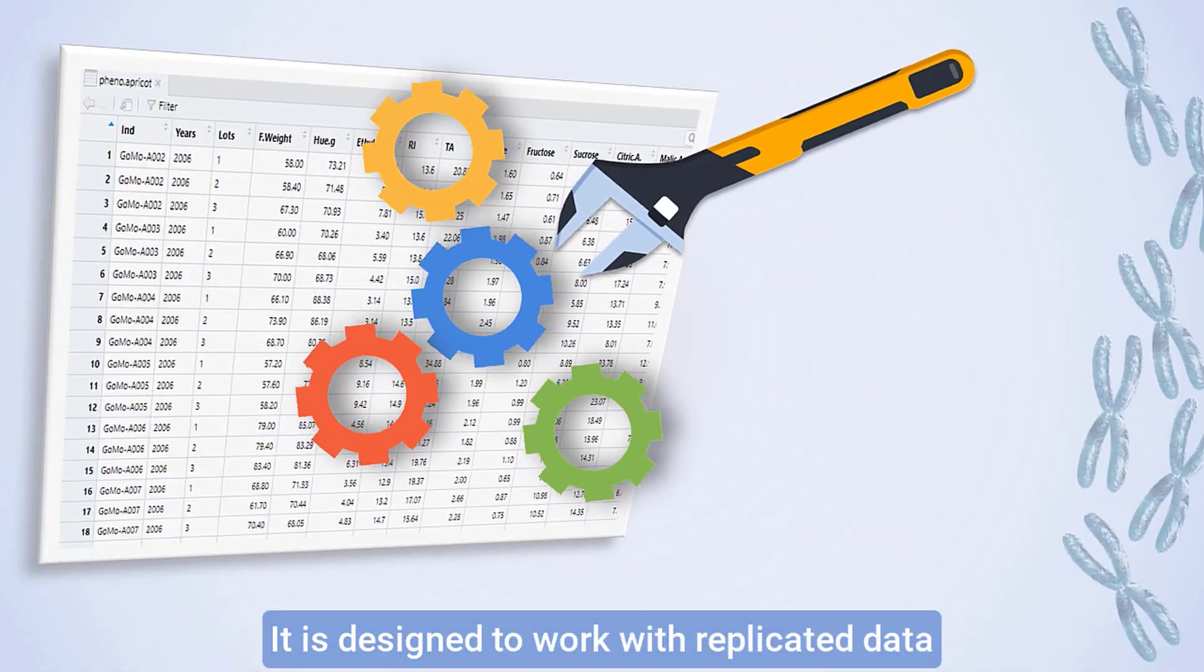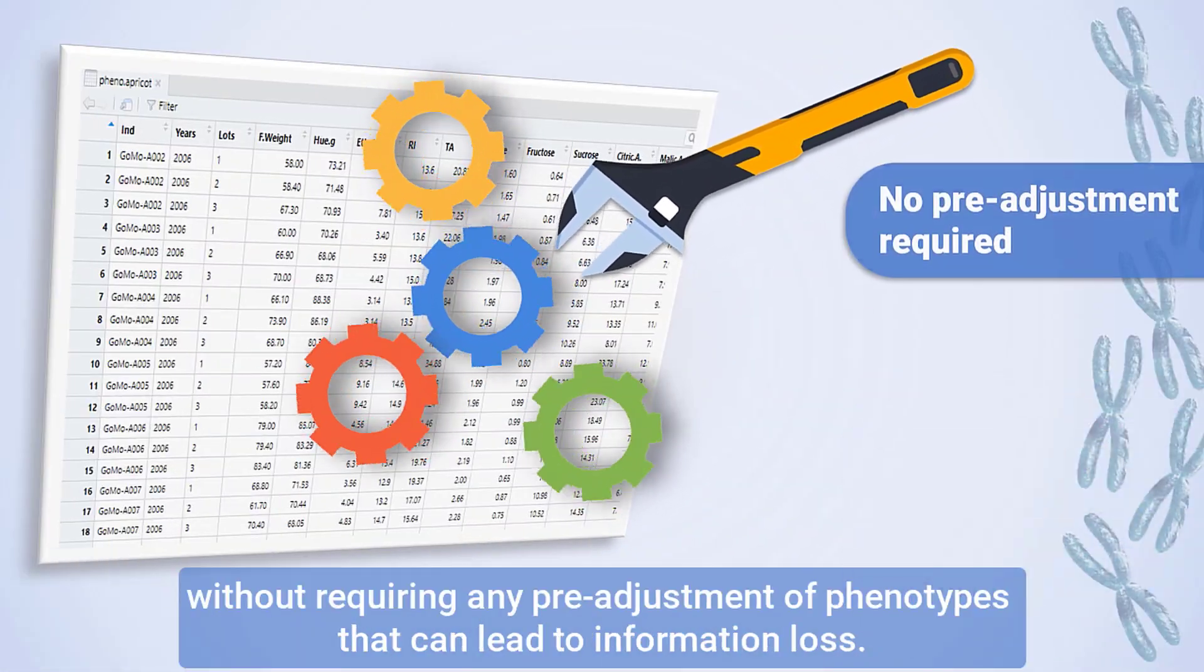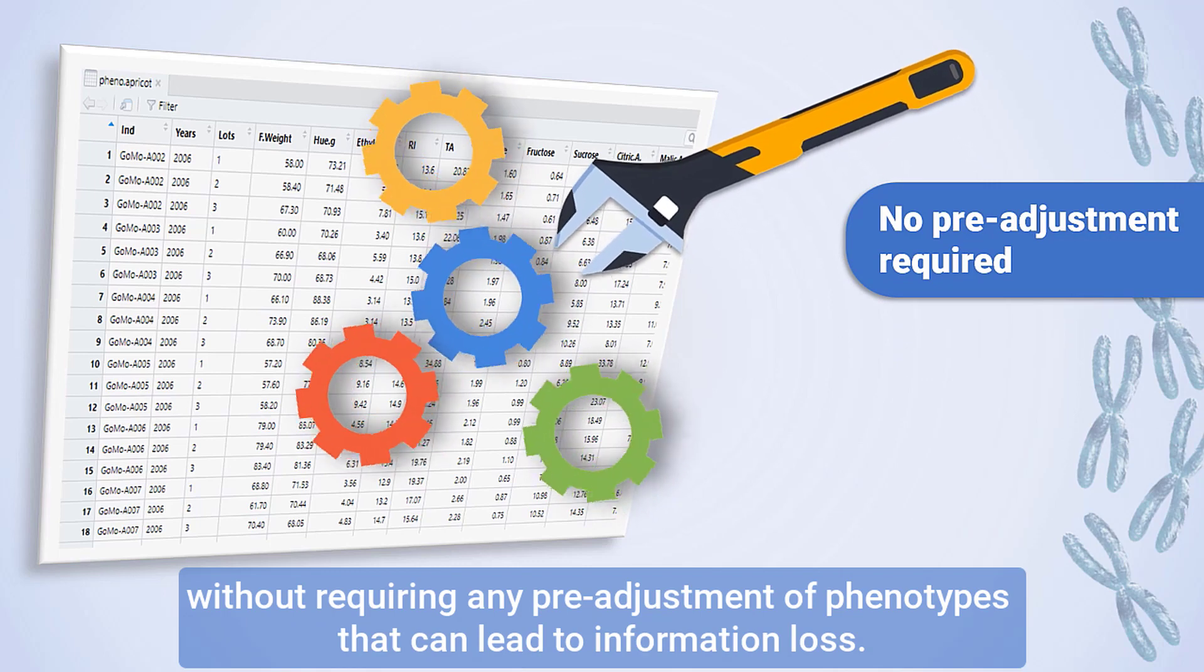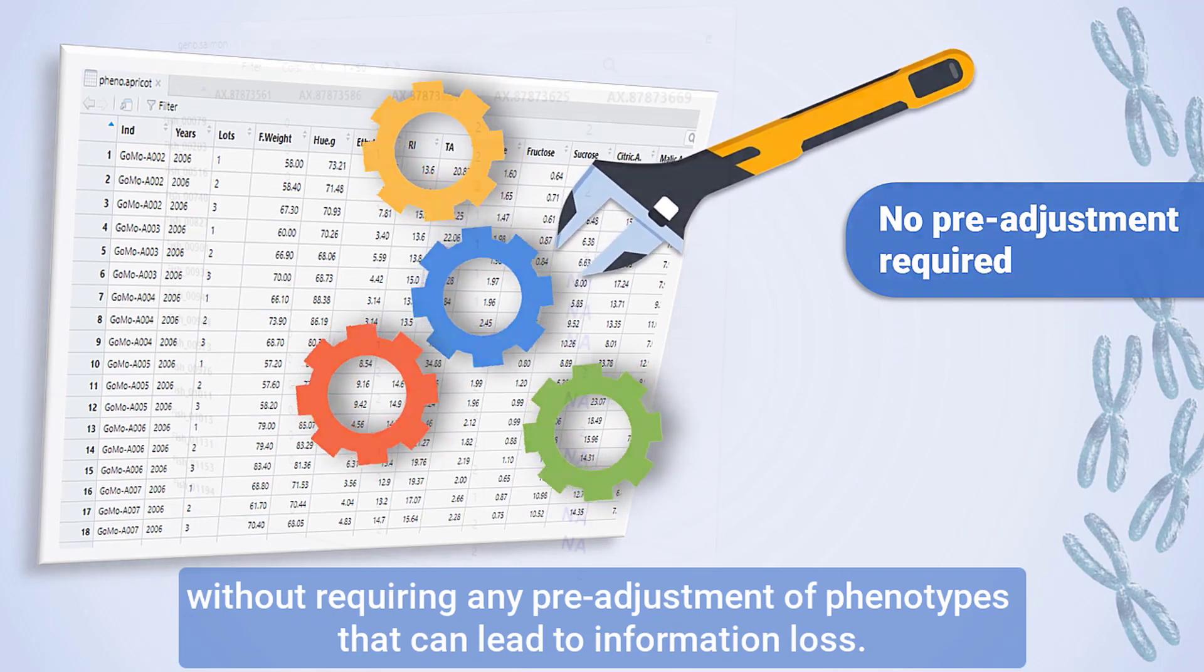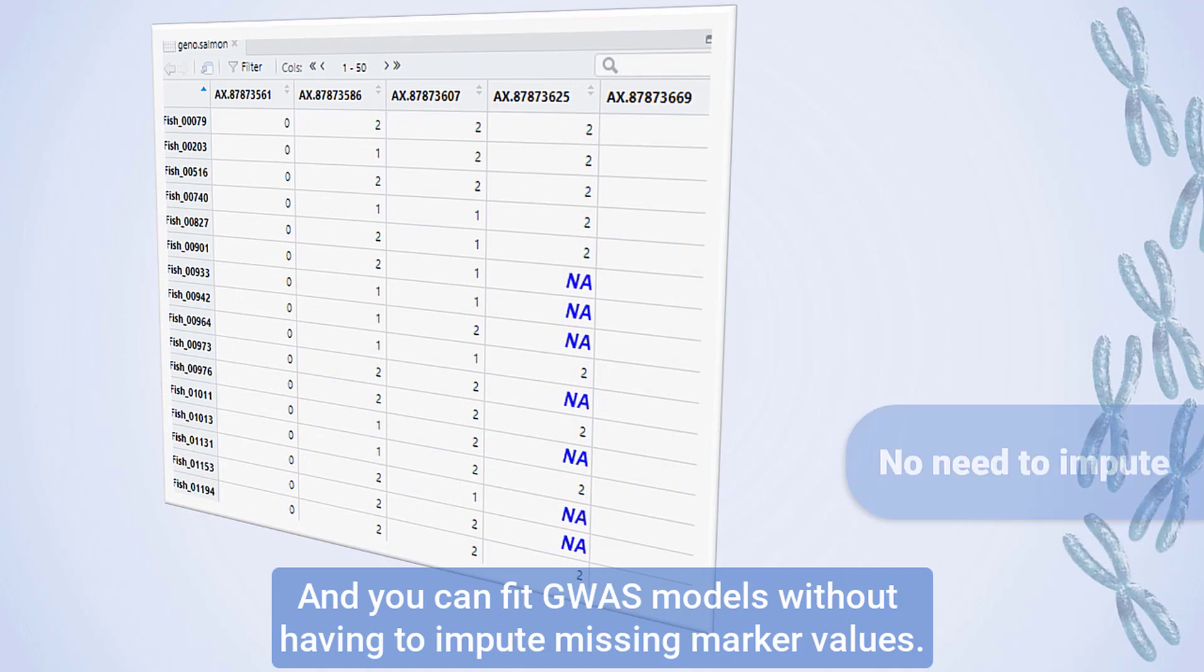It is designed to work with replicated data without requiring any pre-adjustment of phenotypes that can lead to information loss, and you can fit GWAS models without having to impute missing marker values.